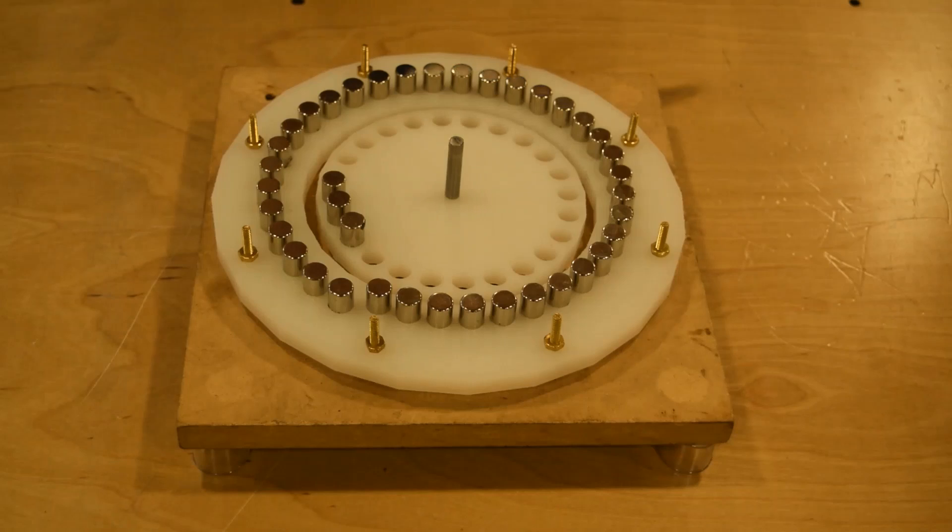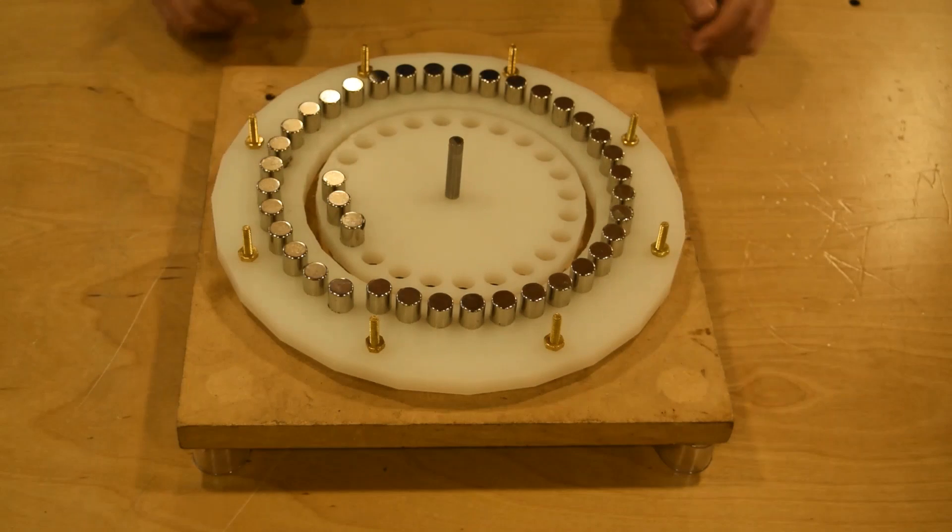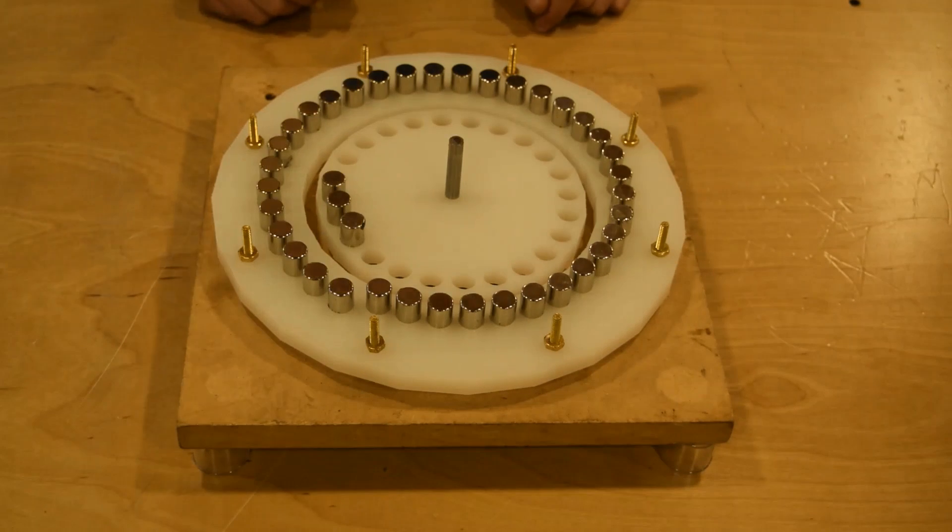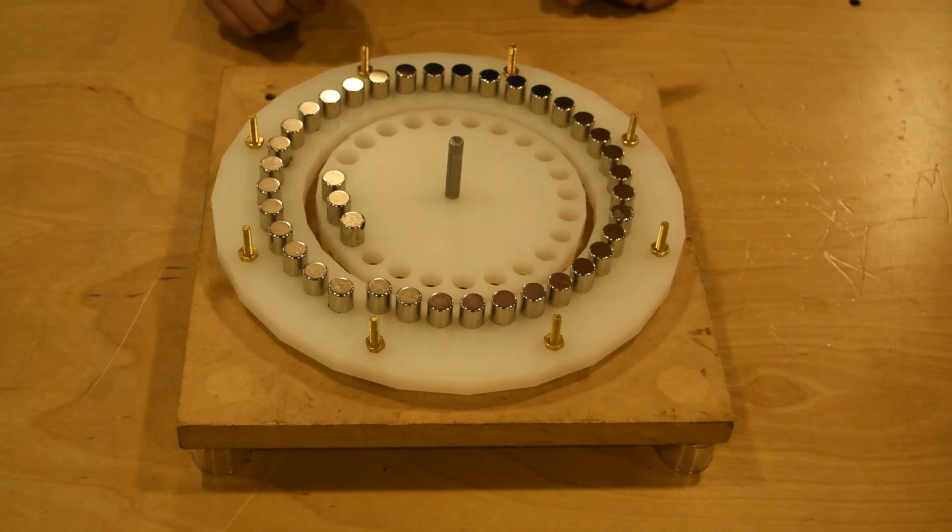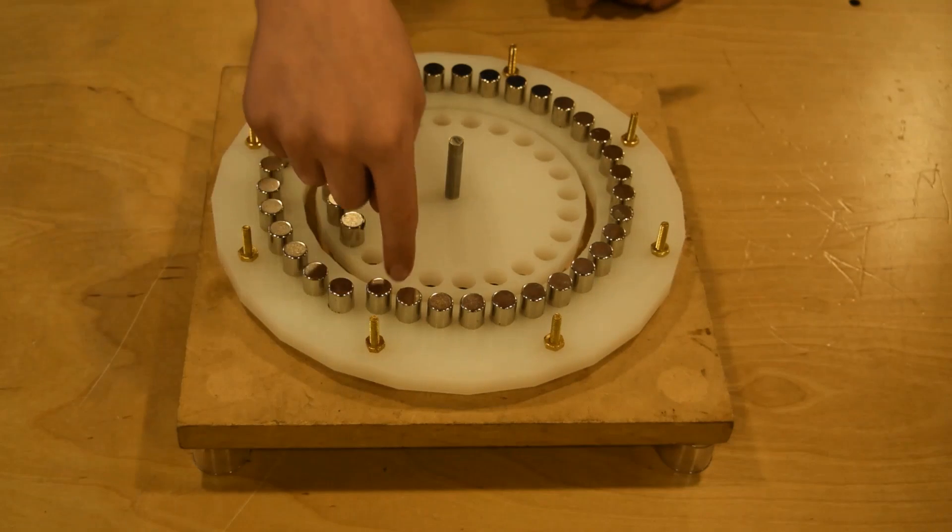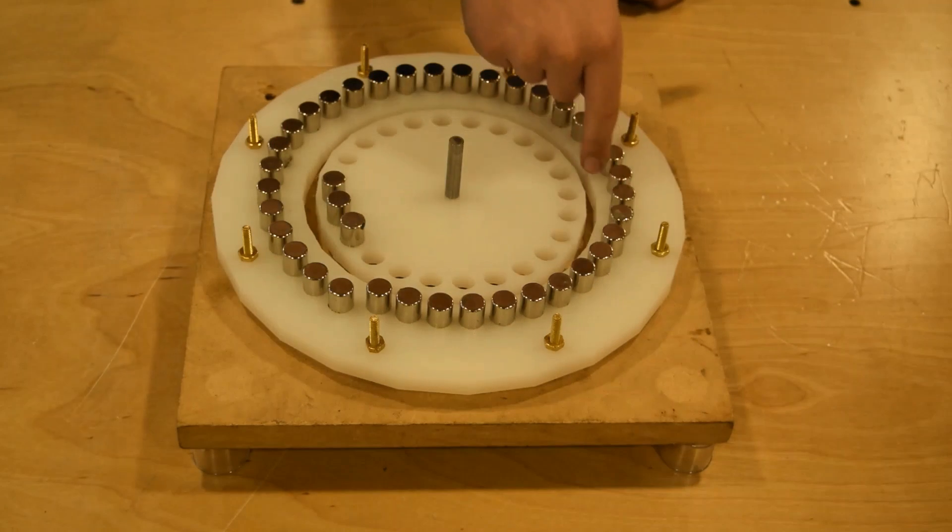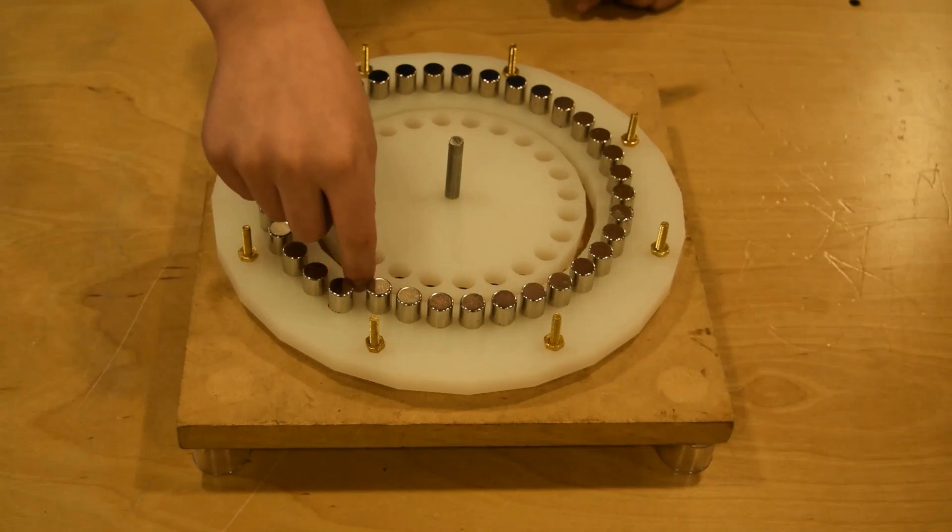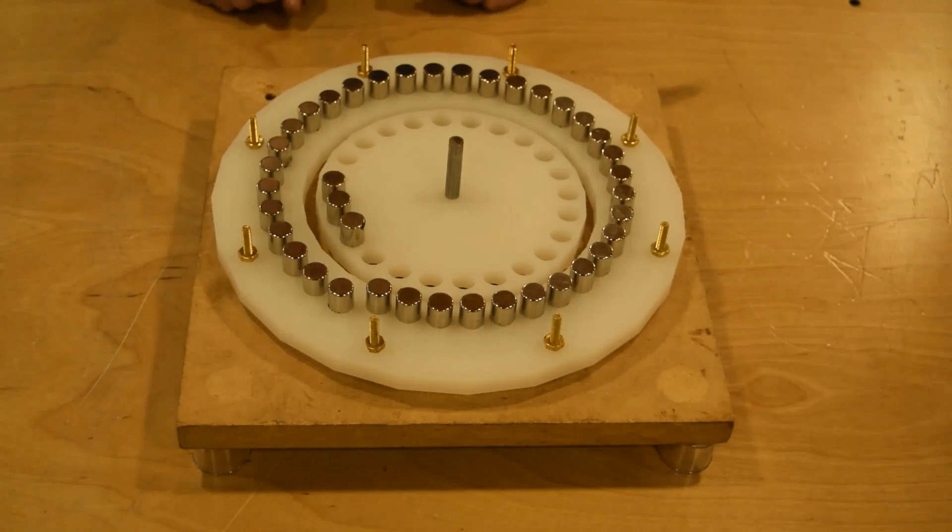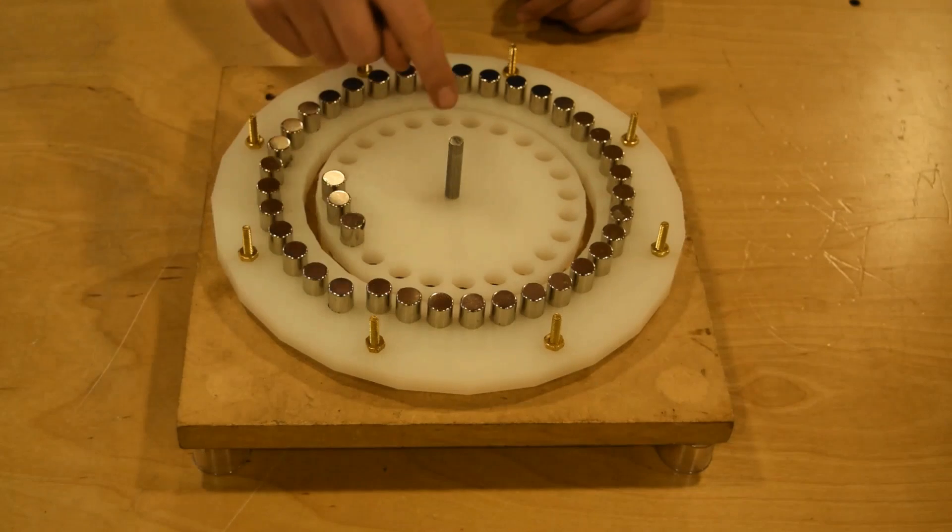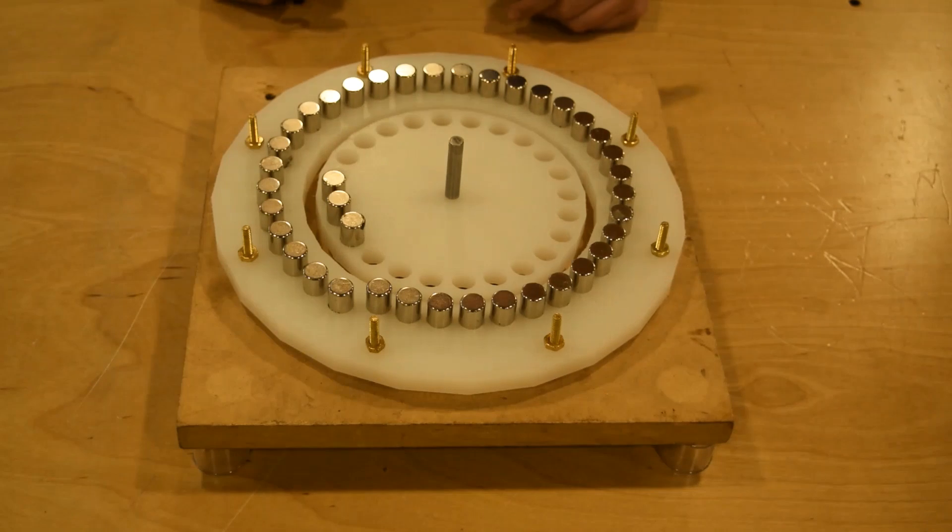This is our number four prototype. If you look closely here, there are stator magnets that are slightly offset to the center of the rotor. Here, the magnets are closer to the center. Progressively, they are going further away from the center.